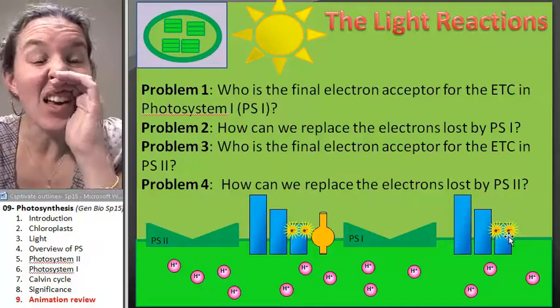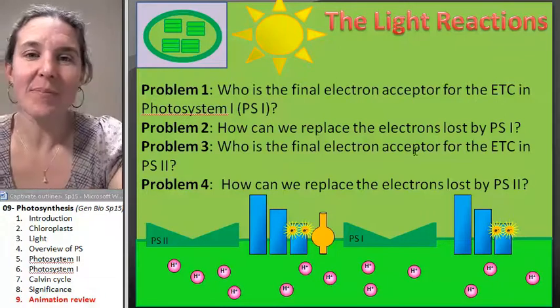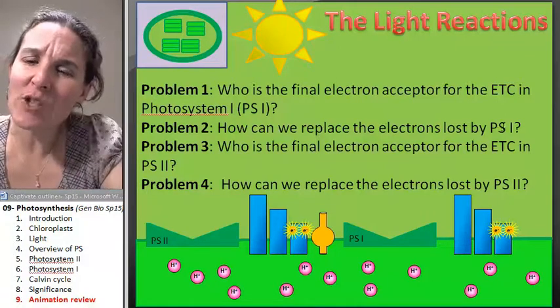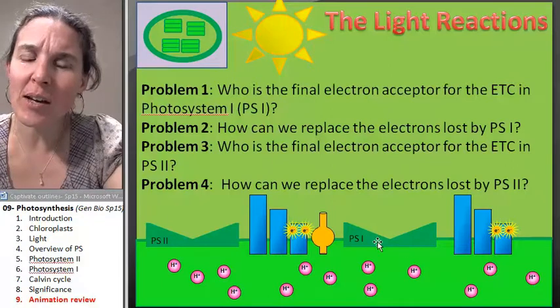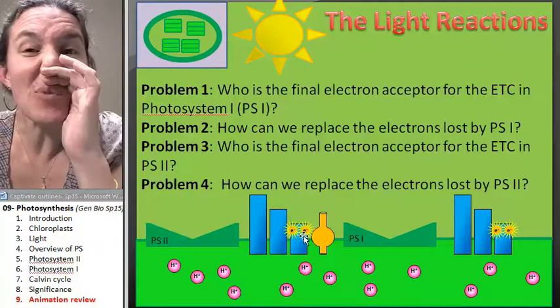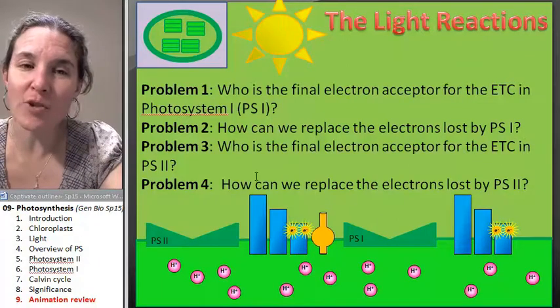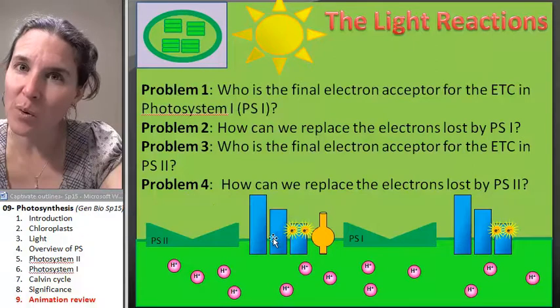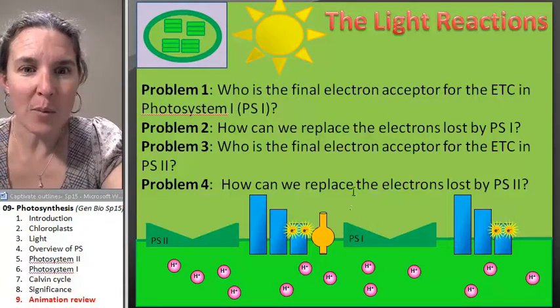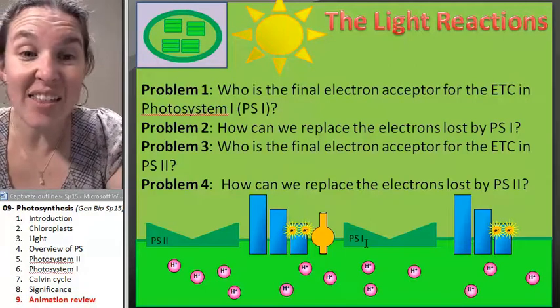It's the high-energy electron carrier. How do we replace the electrons lost by photosystem one? You know that, too. Get them from photosystem two. Who's the final electron acceptor for the electron transport chain in photosystem two? We just answered that one with number two. Give it to photosystem one.